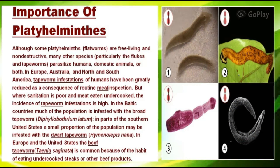Now we will discuss the importance of this phylum. Although some Platyhelminthes are free-living and non-destructive, many species — particularly the liver fluke and tapeworm — parasitize humans, domestic animals, or both. In Europe, Australia, and North and South America, tapeworm infestations in humans have been greatly reduced due to improved sanitation. But where sanitation is poor and meat is eaten undercooked, the incidence of tapeworm infestations remains high.